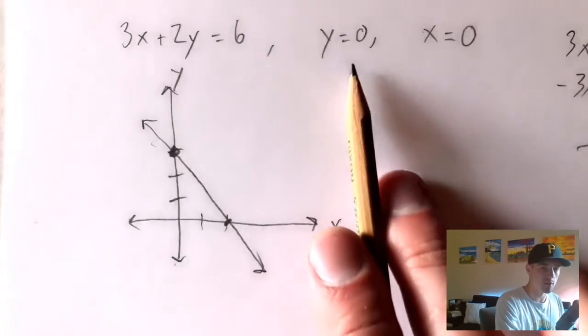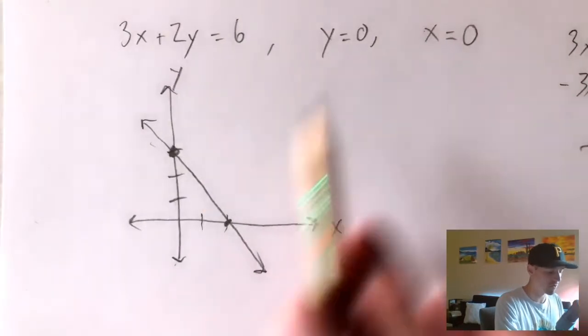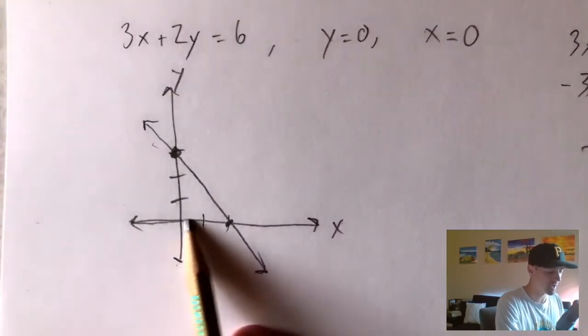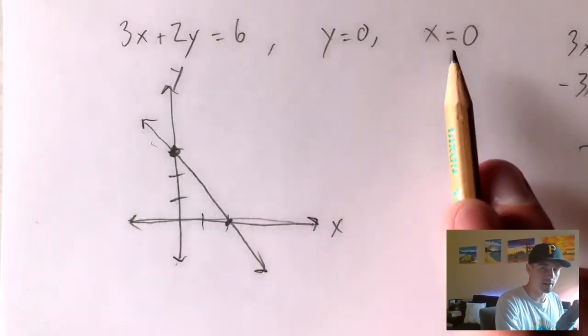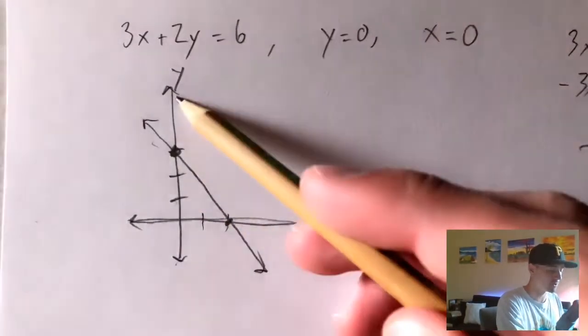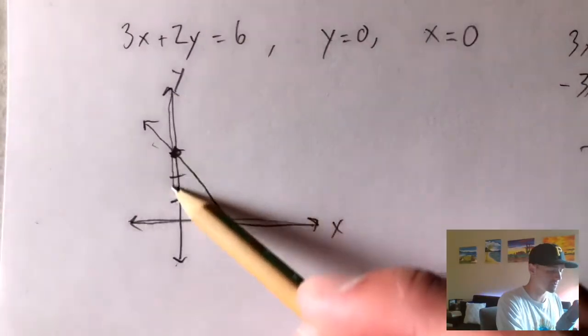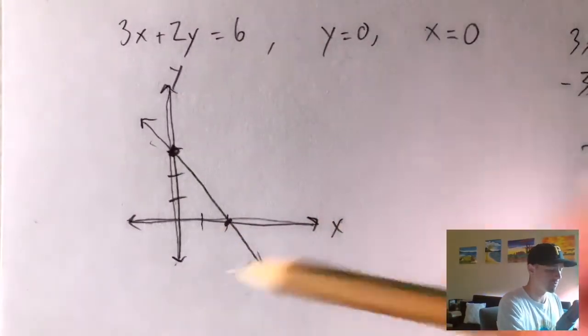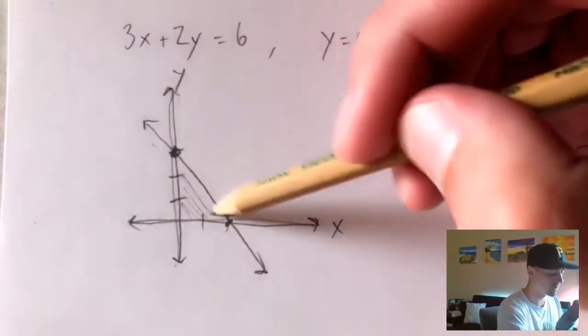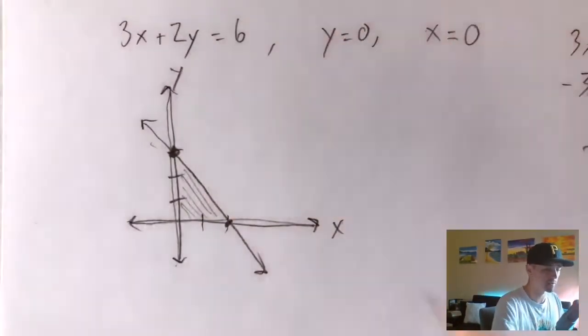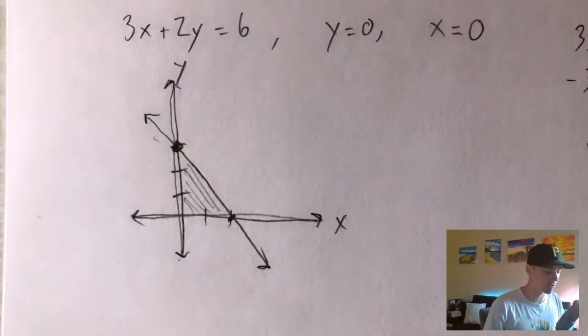Then we're going to have the line y equals 0, which is just the x-axis, and the line x equals 0, which is the y-axis. So basically you can see the region we're going to be looking at is that little triangle right there.